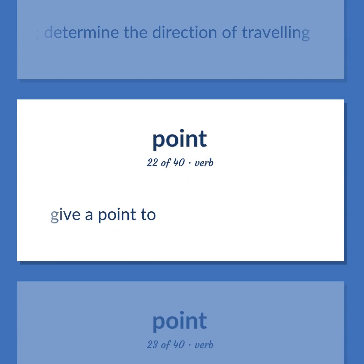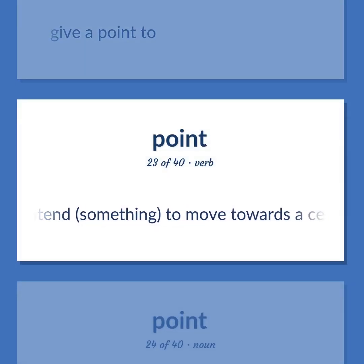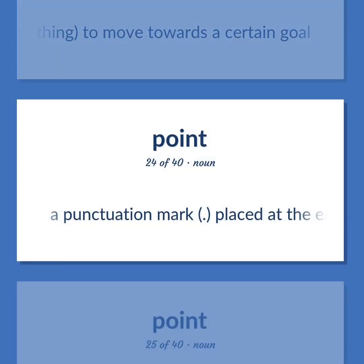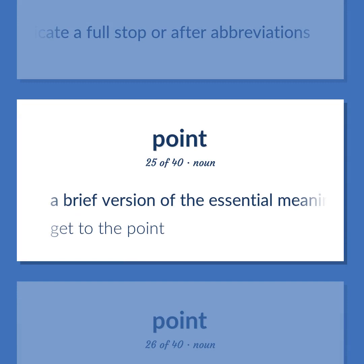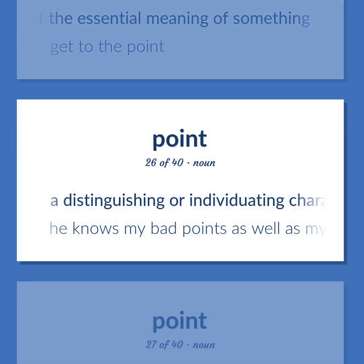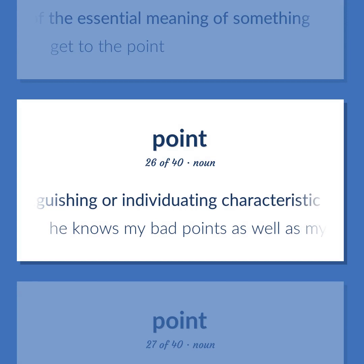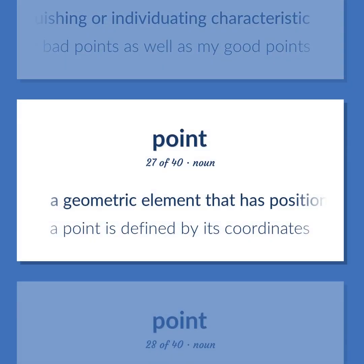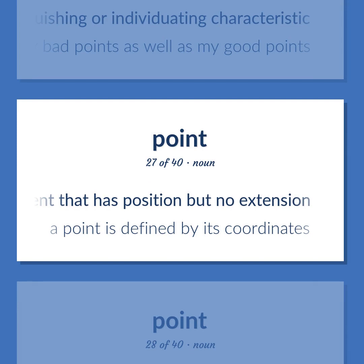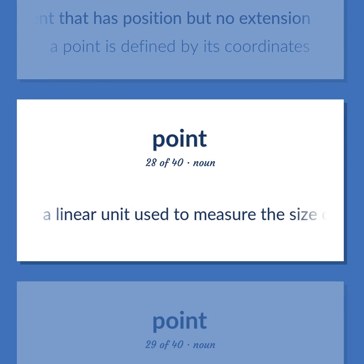Give a point to. Intend something to move towards a certain goal. A punctuation mark placed at the end of a declarative sentence to indicate a full stop or after abbreviations. A brief version of the essential meaning of something. Get to the point. A distinguishing or individuating characteristic. He knows my bad points as well as my good points. A geometric element that has position but no extension. A point is defined by its coordinates. A linear unit used to measure the size of type; approximately 1/72nd inch.